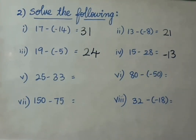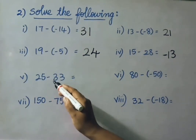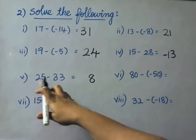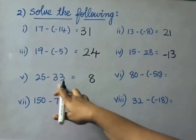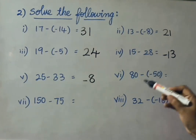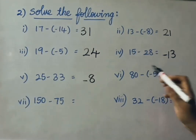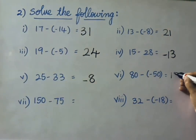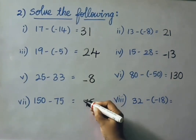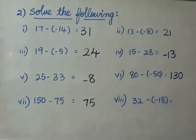See the next one: 80 minus of minus 50 — that means 80 plus 50, that is 130. See the next: 150 minus 75 — if we subtract, we get the answer 75. See the next: 32 minus of minus 18 — that means 32 plus 18, so the answer is 50.